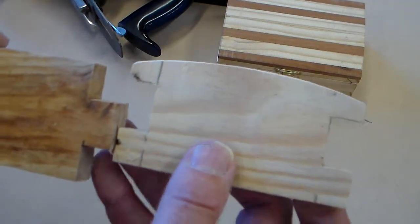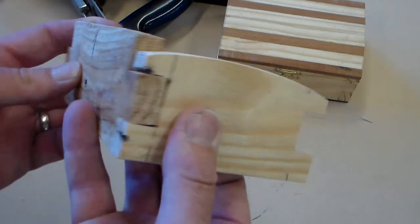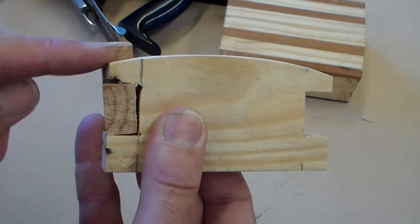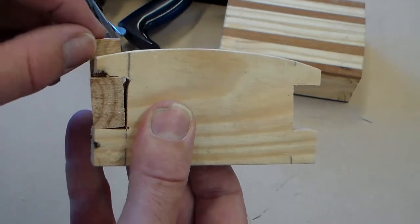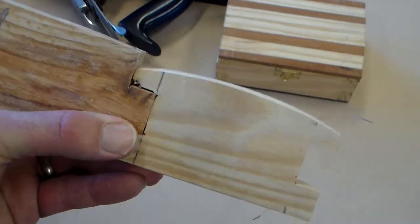Now our next problem here is when we fit it to the sides, we can see that we've got this edge along the top is sticking up. And we need to shape that. We need to remove this material here and we need to shape that to take it off.